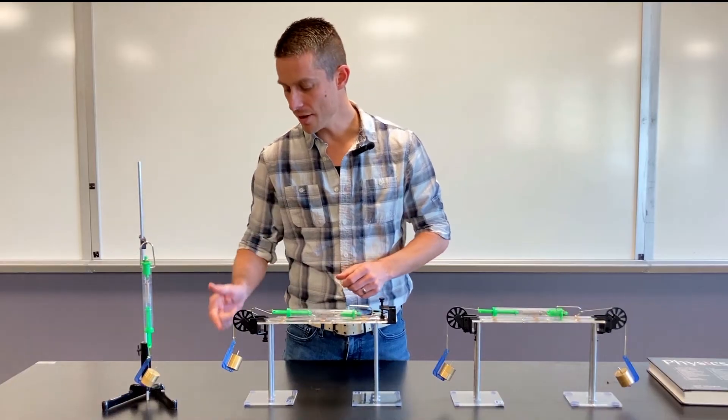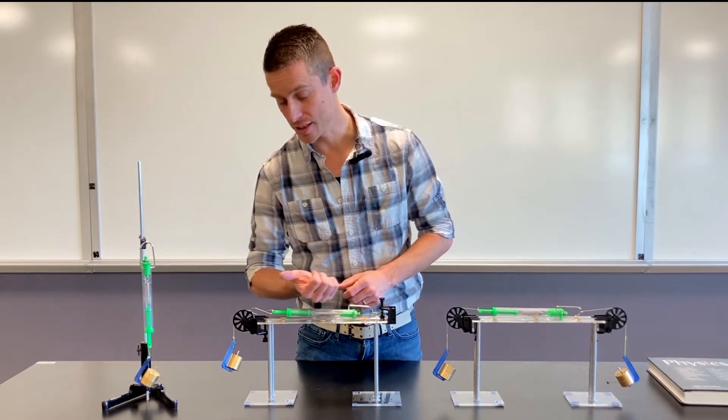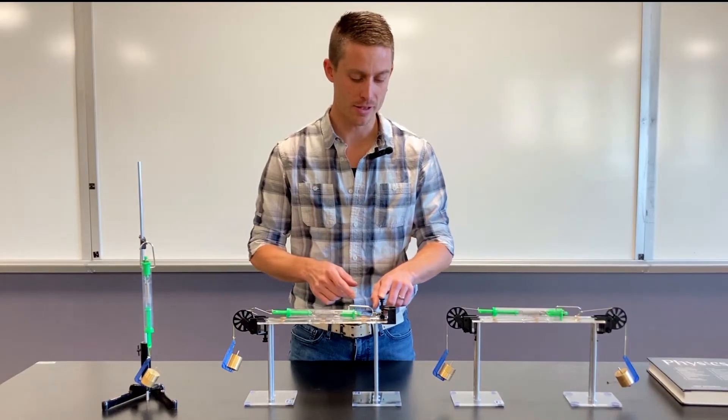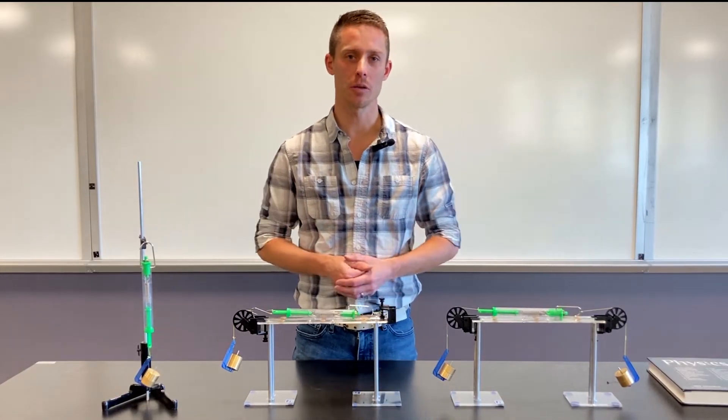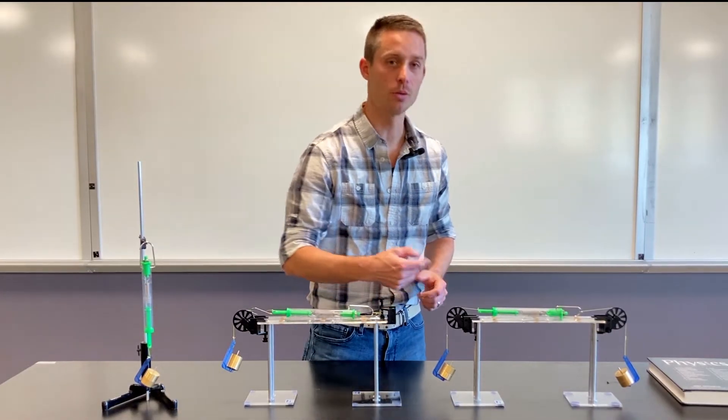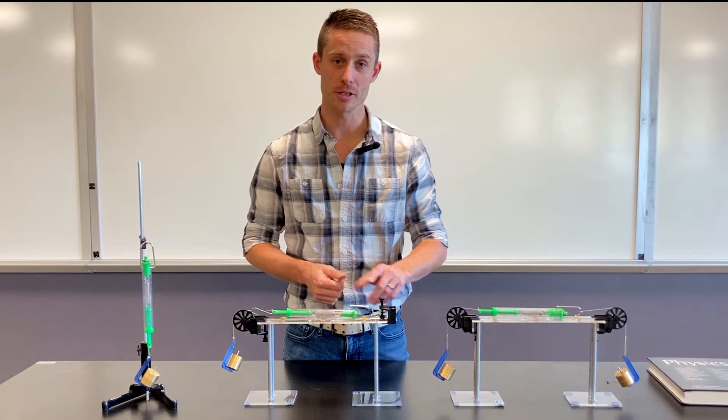Now, in this situation, if this weight right here and the string attached to it is pulling to the left on this spring scale, then this bracket has to be pulling to the right in equal amount. So if there's two newtons of pull to the left, that means there's going to be two newtons of pull to the right from this bracket.